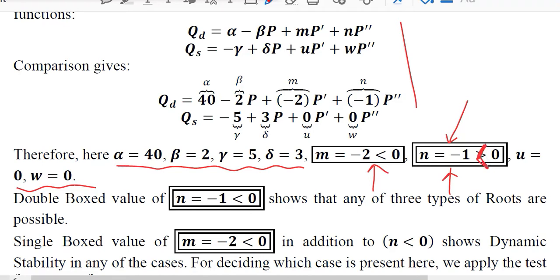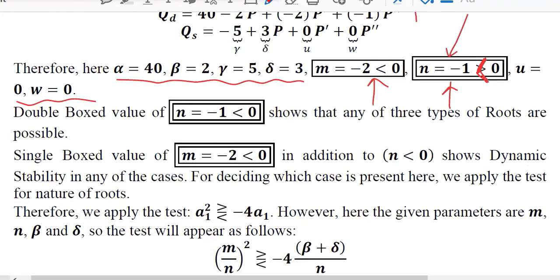From this point we can already guess that the dynamic stability will be present because if both of m and n are negative, it leads to dynamic stability. However, we will do this numerically as well.